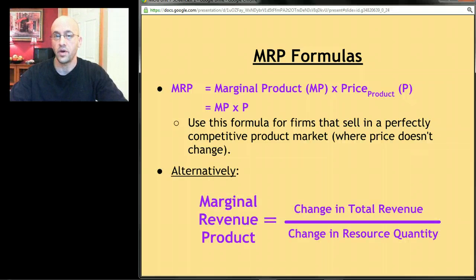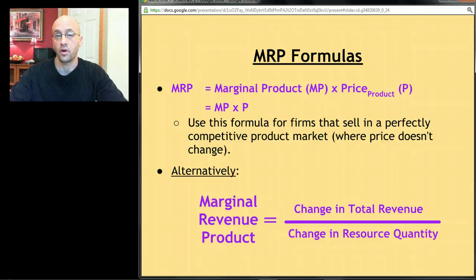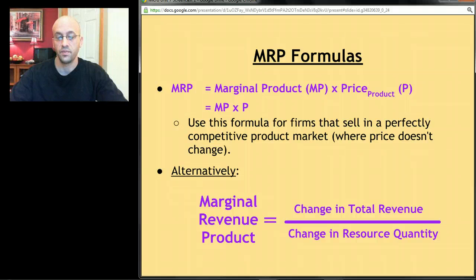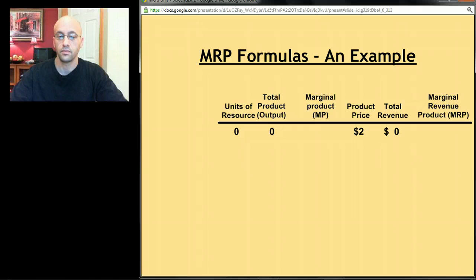If we're not in a perfectly competitive product market — if price changes as production changes — we use the second formula. This second formula can also be used in a perfectly competitive market, but in an imperfectly competitive market, it's the only one we can use. The formula is: MRP = Change in Total Revenue ÷ Change in Resource Quantity, meaning how much more money comes into my cash register if I hire one more unit of a resource.